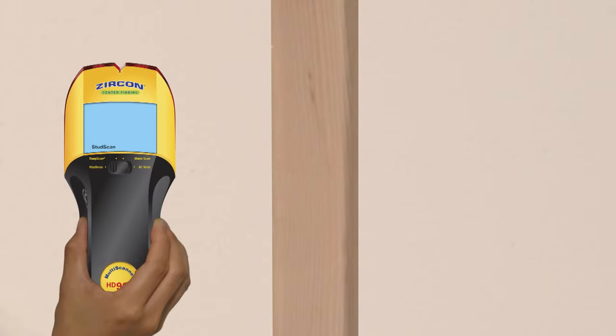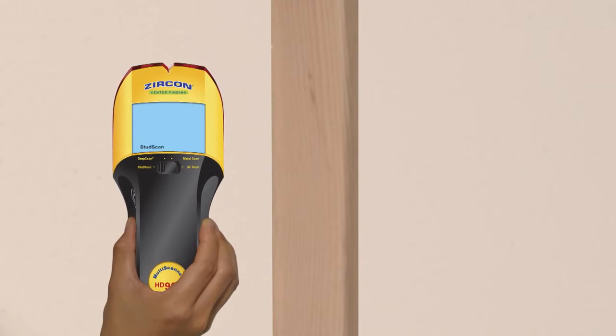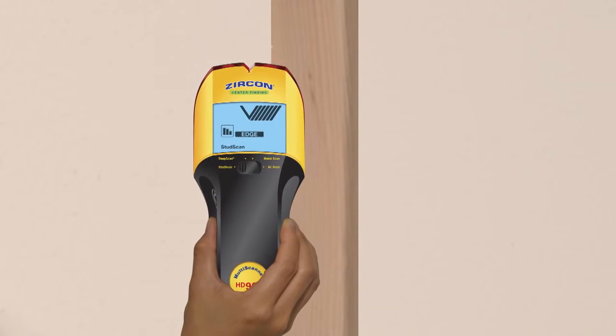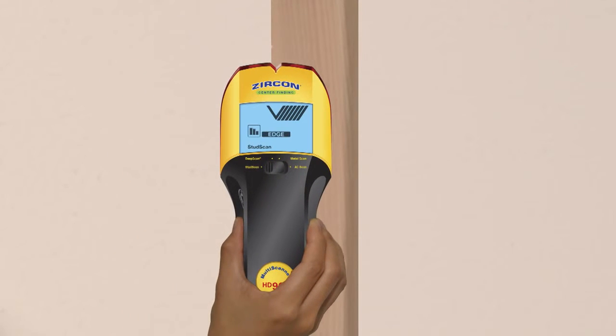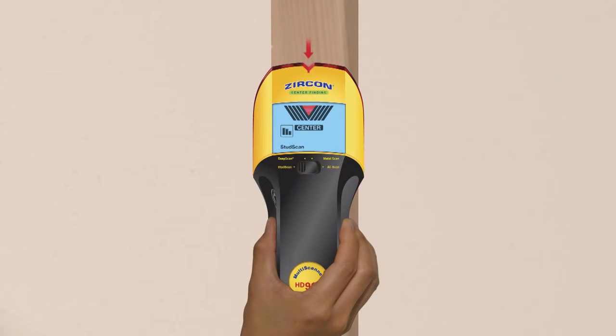To find studs, select stud scan mode. The display indicates when you near and find a stud edge. The spotlight pointer shines when you've found the center.